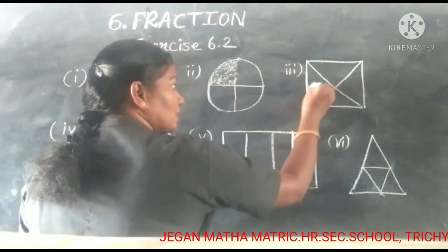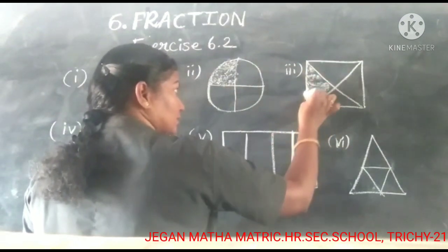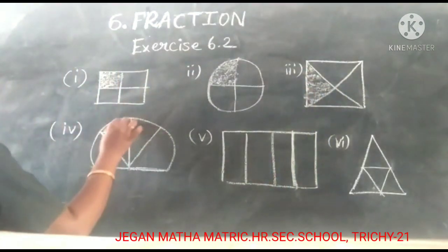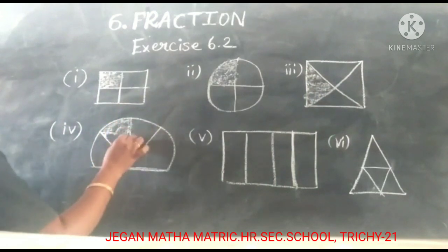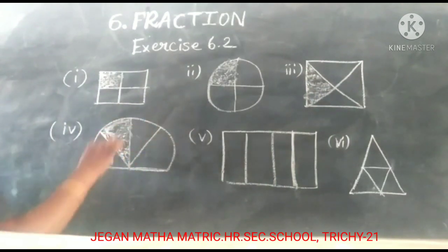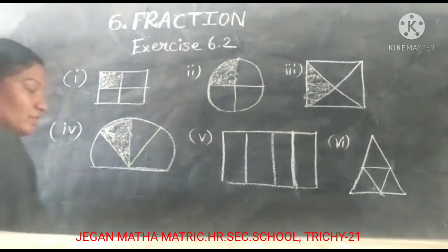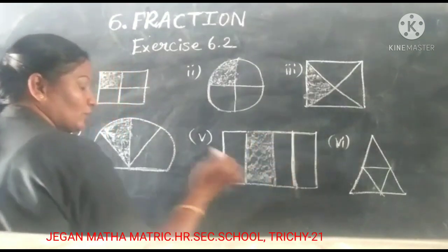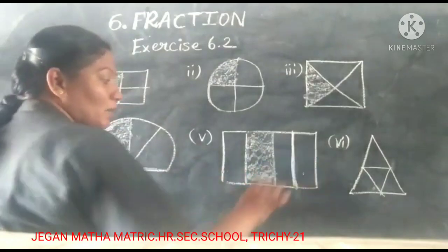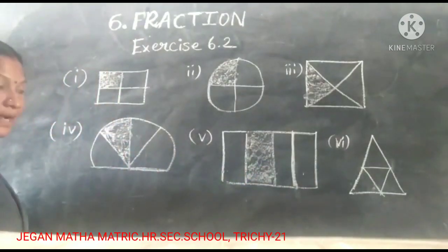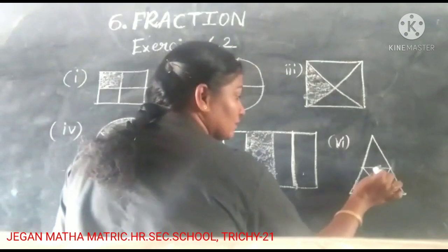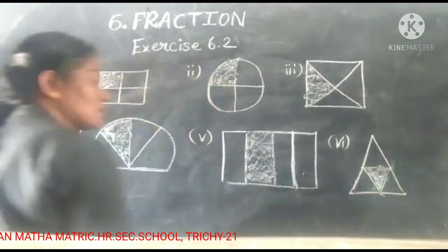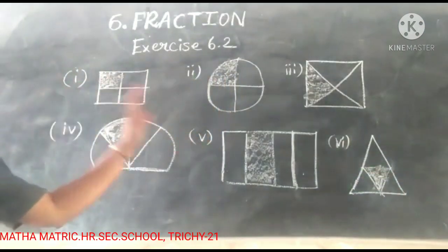Next one — this picture, shade the quarter portion like this. Next one — you want to shade only one portion. See the rectangle — one of the portions. So totally four equal portions, one portion you want to shade. This is the quarter portion of this shape.